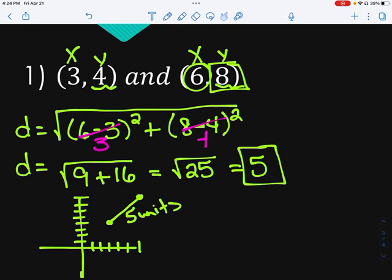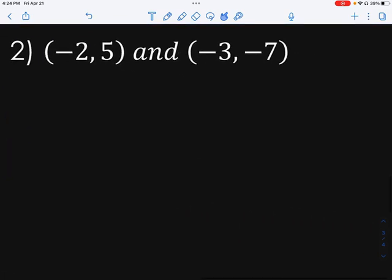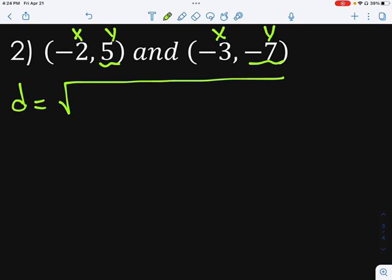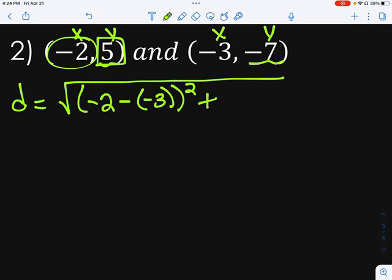So let's try another one. Let's take a look at number 2 here. So once again, we're going to start off. Here's my x, here's an x, here's my y, here's my y. So I start in and I say distance is equal to. Now I'm going to go x minus x. It doesn't matter which one we start with. Here, we'll just start with this one. So we'll go negative 2 minus a negative 3 quantity squared plus, since I started with the 2, I've got to start with the 5. And now we're going to go 5 minus negative 7 squared.